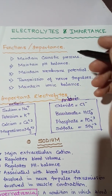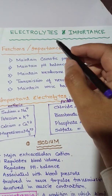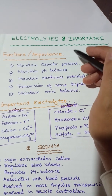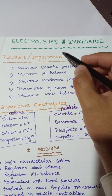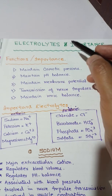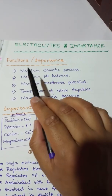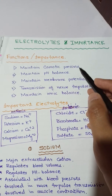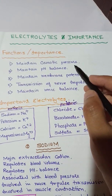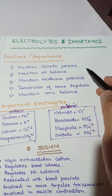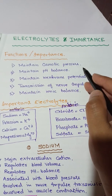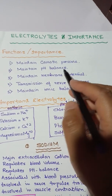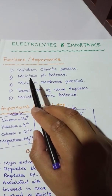Today we will discuss electrolytes and their importance. In our previous videos we studied what electrolytes are. Today we will discuss what are the functions of electrolytes. Electrolytes are important to maintain osmotic pressure. We also studied what osmotic pressure is and how it is helpful for the movement of water inside the body.